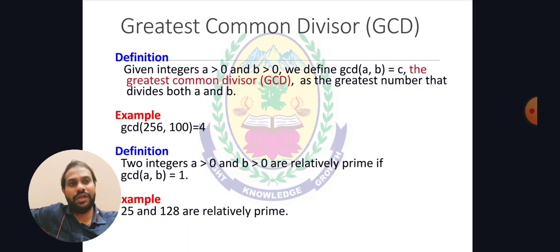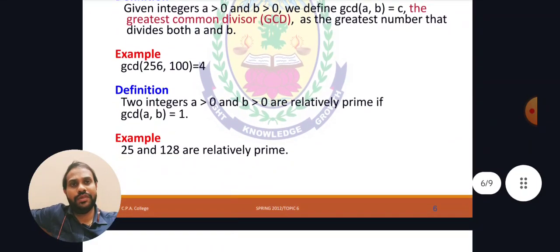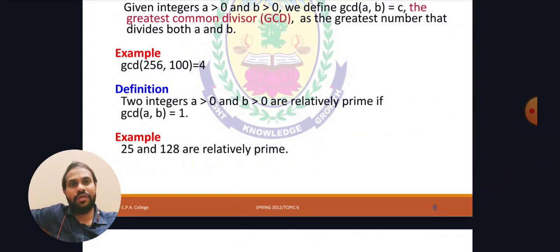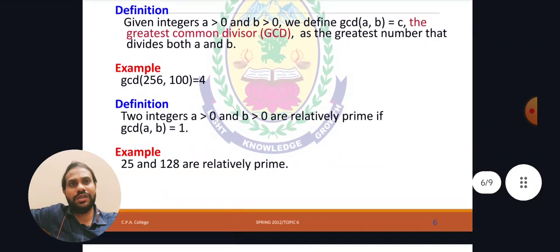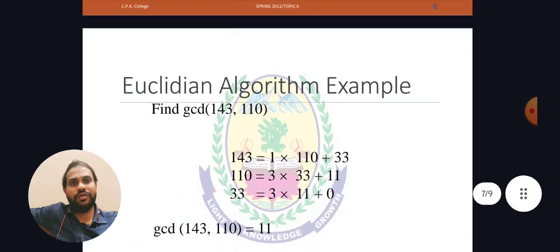Relative prime: two integers a and b (both greater than 0) are said to be relatively prime if gcd(a, b) equals 1. If the GCD of both numbers is 1, then a and b are relatively prime. For example, 25 and 128 are relatively prime — 25 is a multiple of 5 and 128 is a power of 2, so they share no common factors, and their GCD is 1.